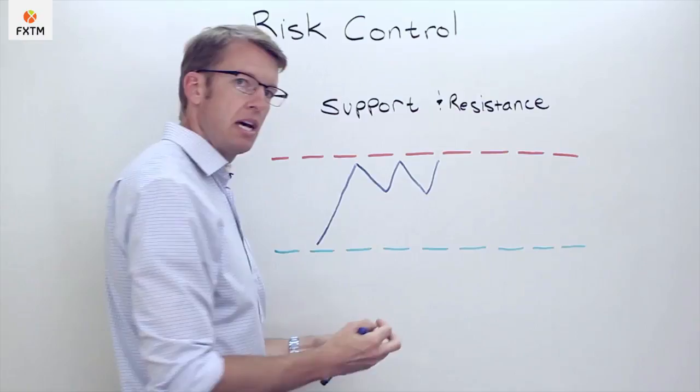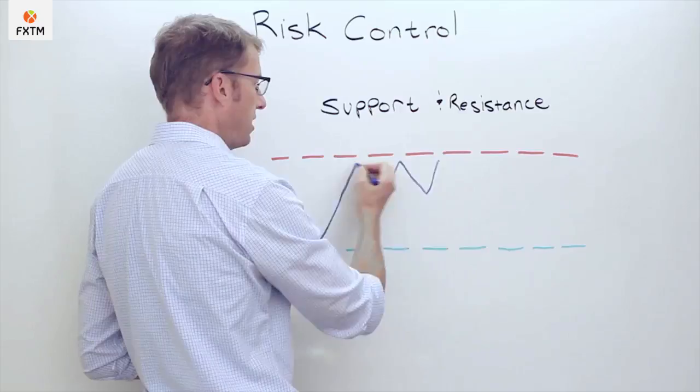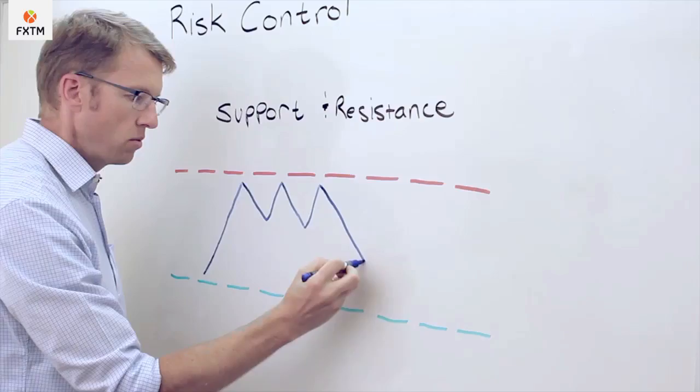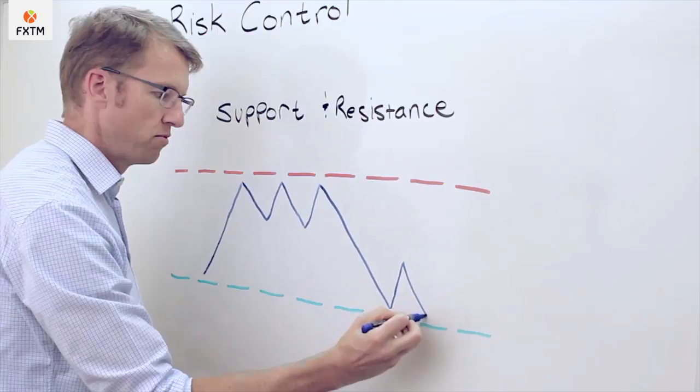So conceptually, what we're talking about when we say support and resistance is that resistance is identified at a price level at which the currency pair has not been able to break through for a while. And of course, support is just the opposite, where a currency pair has been falling but has been unable to break through a particular price level there as well.